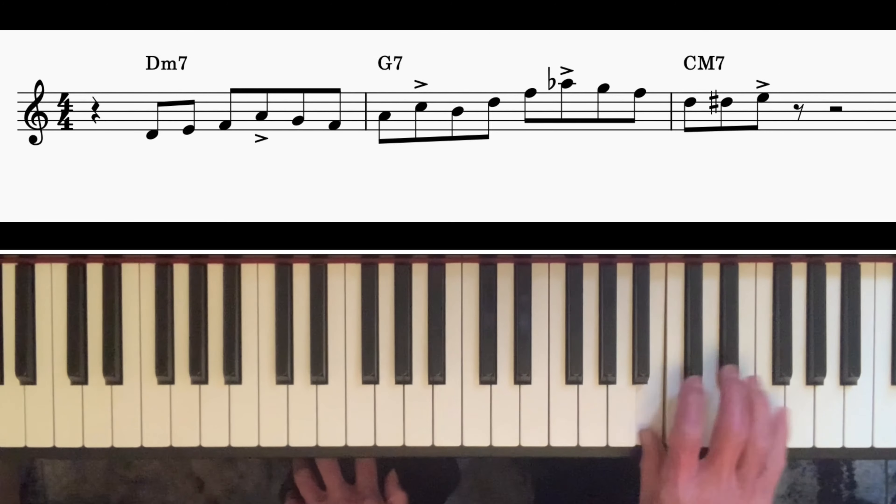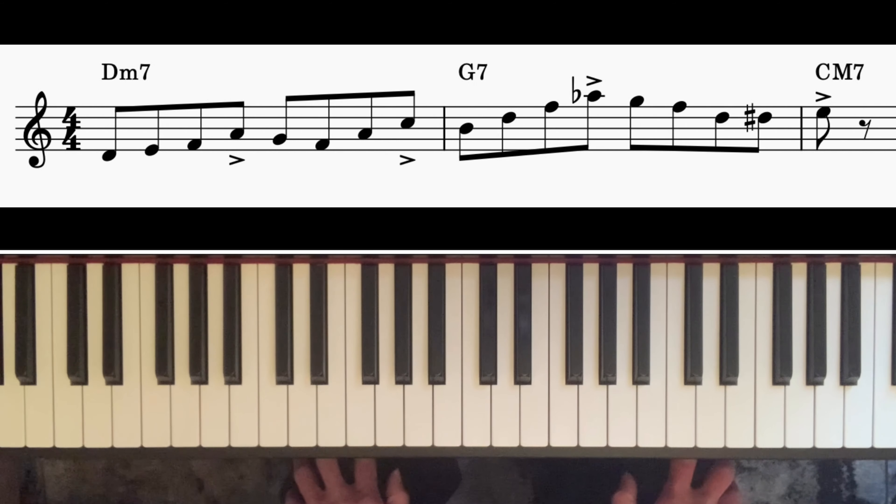And by moving everything forward by one beat, that of course moves the accents into different places. So in the first example, in bar one, the accents fall on the upbeat or off beats of beats two and four—one, two, three, four.